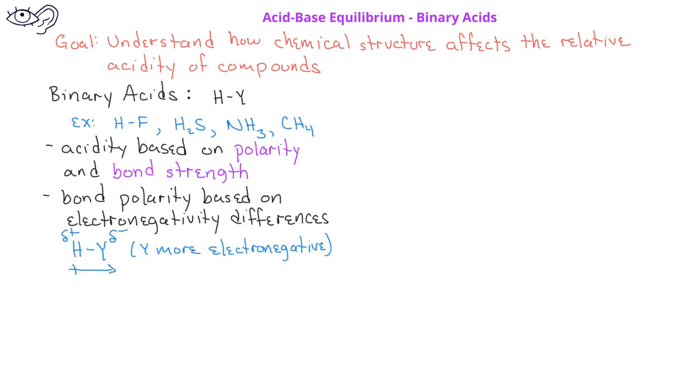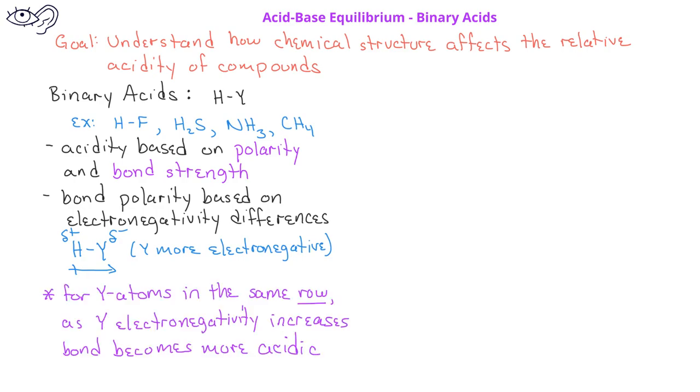We'd have a slight negative charge on the Y and a slight positive charge on the hydrogen. As the HY bond becomes more polar, in other words, has a greater partial positive charge on the H, that compound becomes more acidic. In order to help you with bond polarity, you might want to recall from previous videos what you know about electronegativity trends in the periodic table.